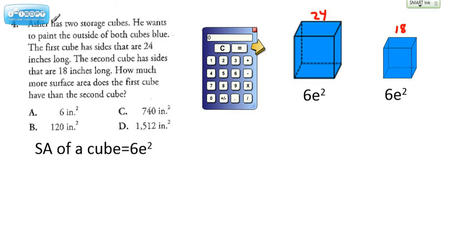Asher has two storage cubes. He wants to paint the outside of both cubes blue. The first cube has sides that are 24 inches long, so we're visualizing that as being 24 inches long. The second cube has sides that are 18 inches long. How much more surface area does the first cube have than the second cube?